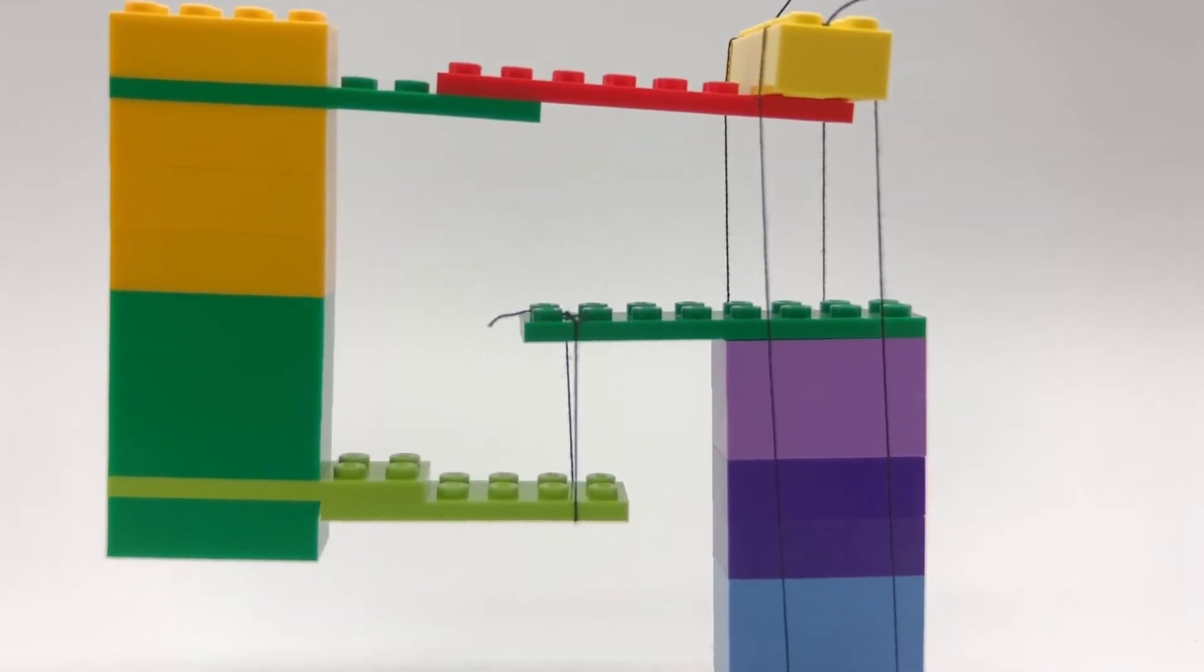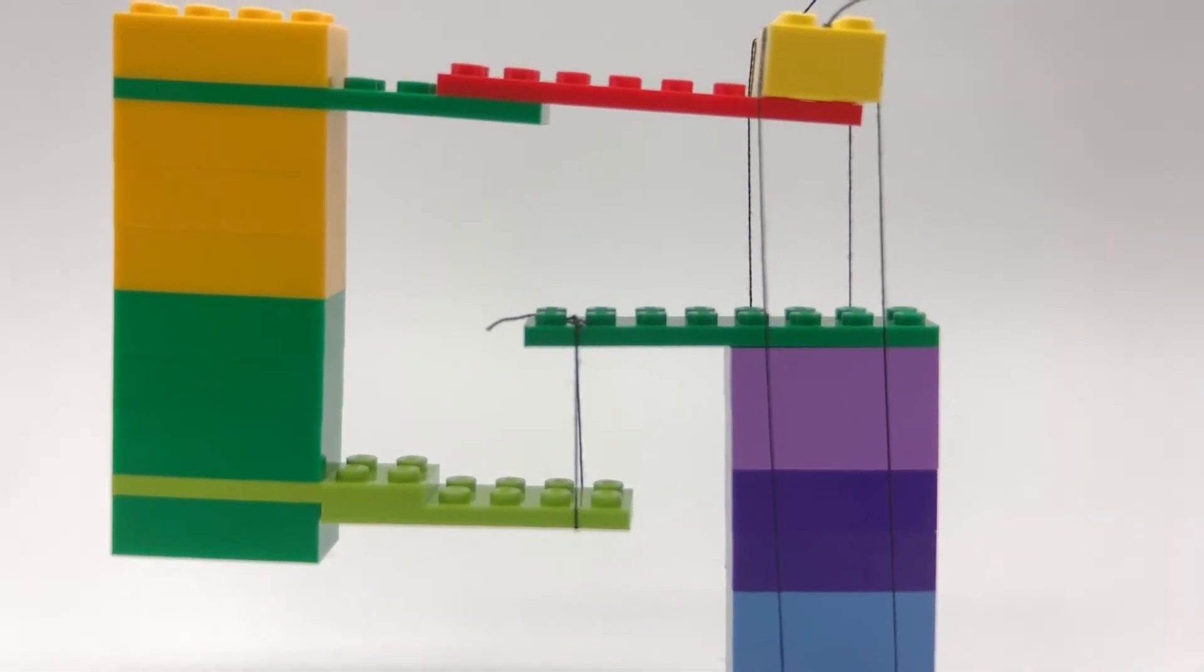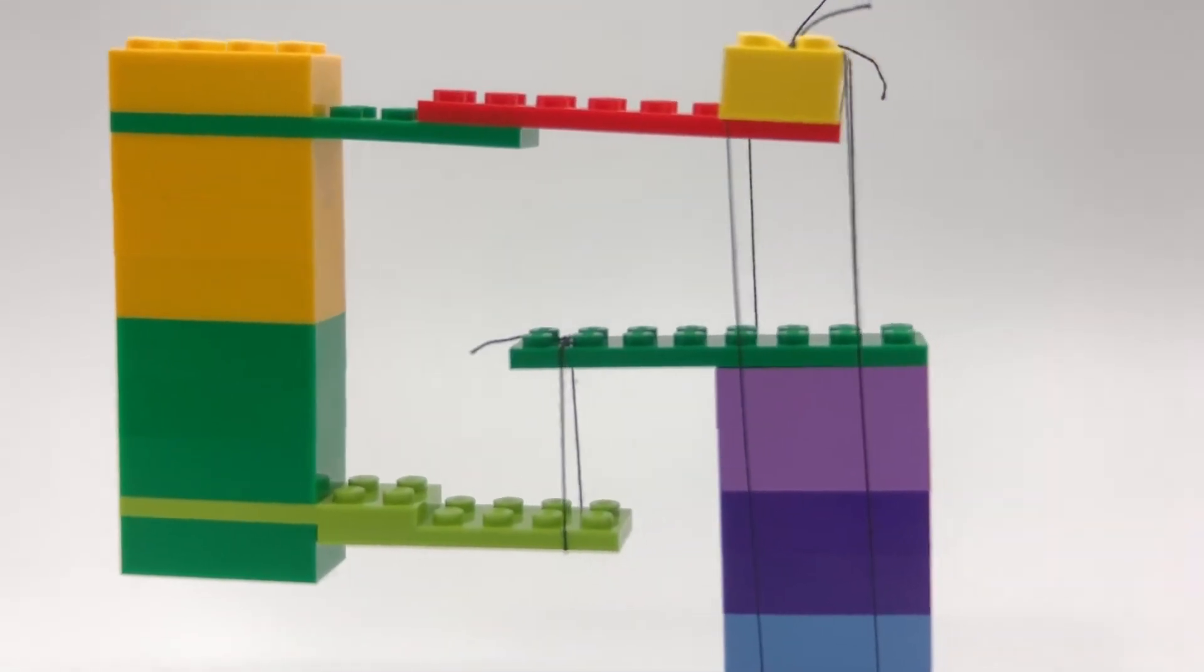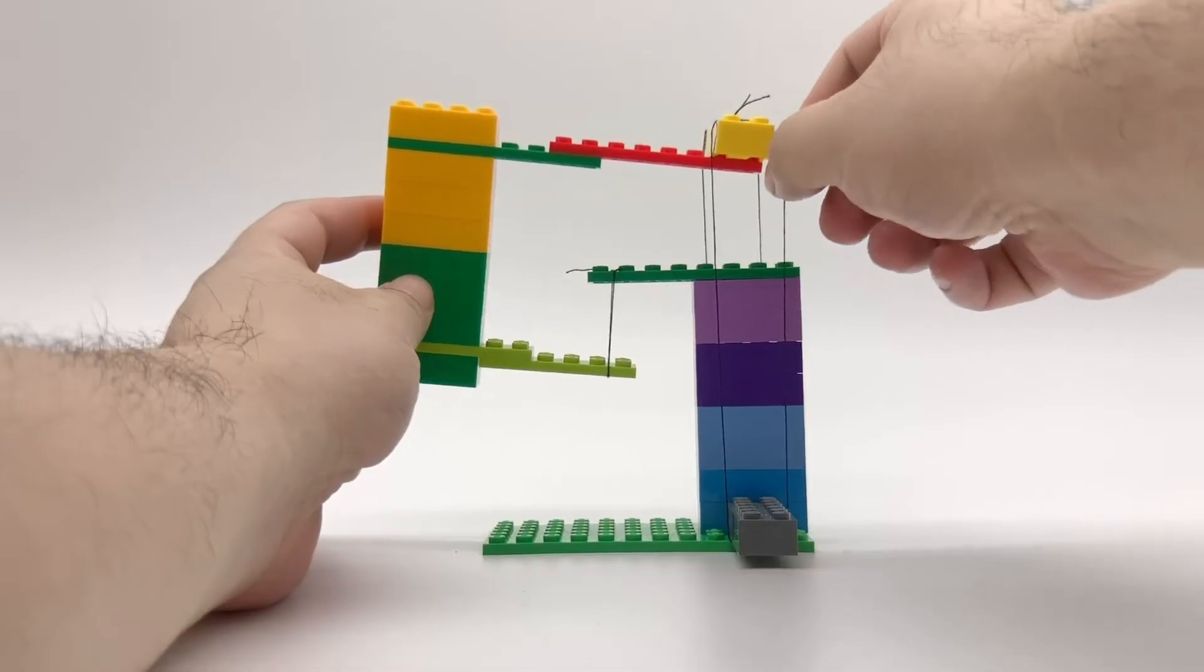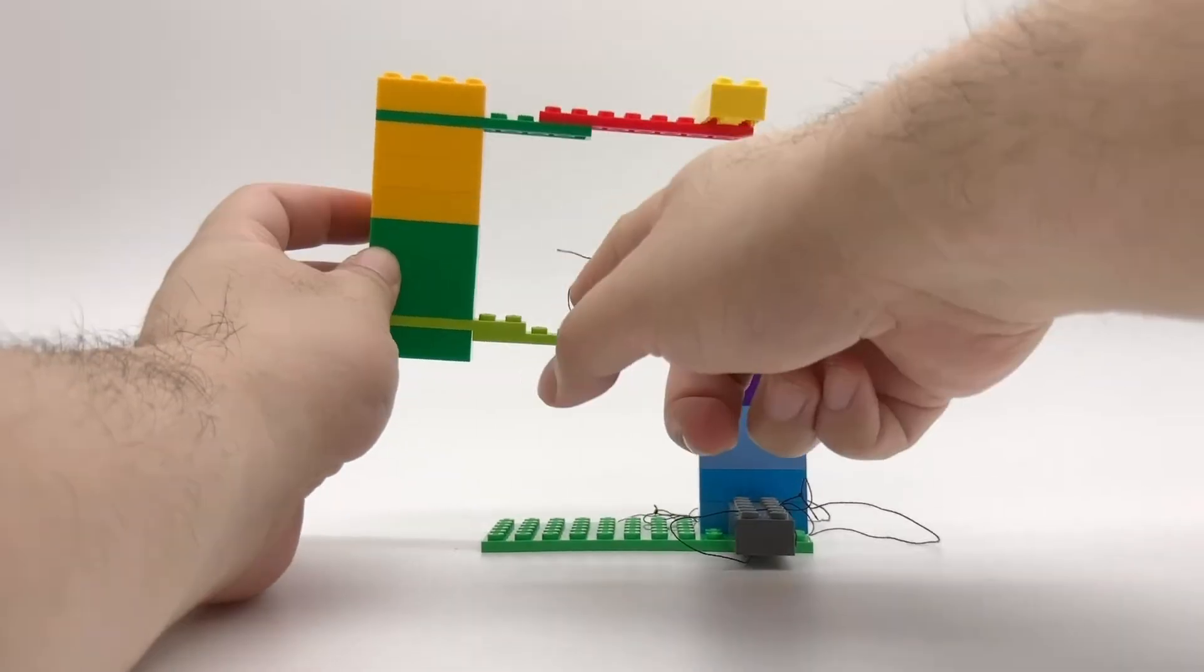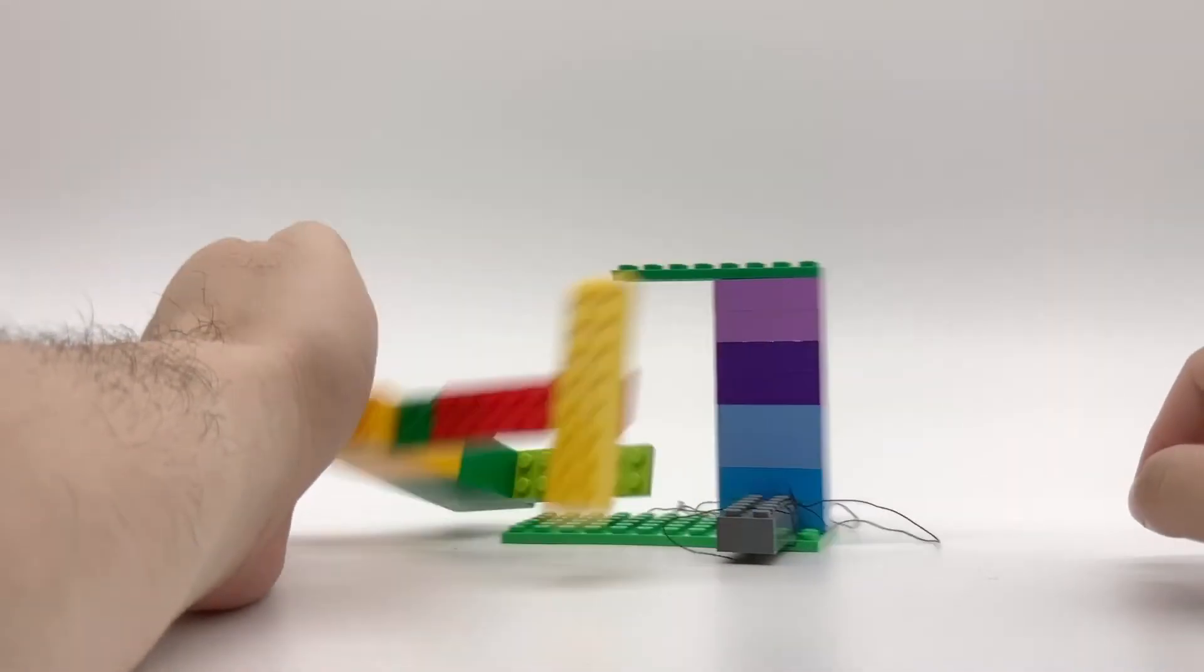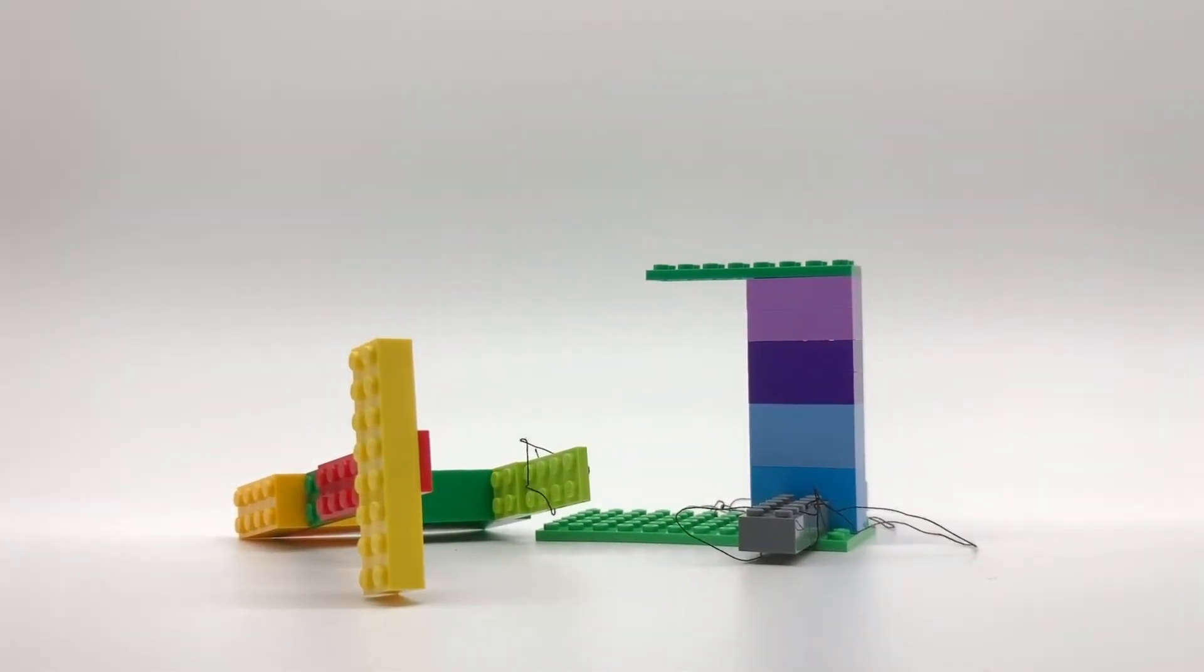Have you ever seen one of these before? It kind of looks like this part is trying to float away, but the strings are holding it down like a hot air balloon. But if you remove these strings, this part actually just falls down. So the strings are actually holding it up?